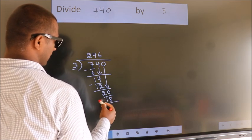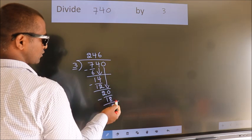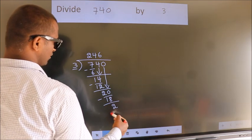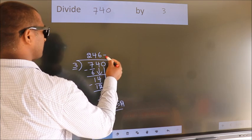Now we subtract. We get 2. No more numbers to bring down, so we stop here. This is our remainder. This is our quotient.